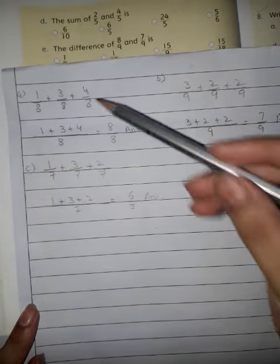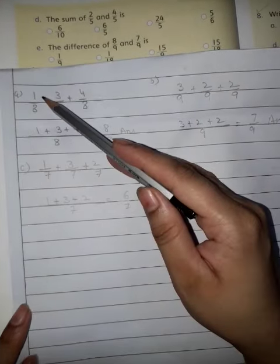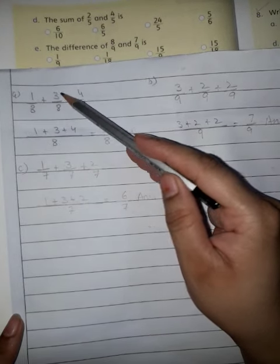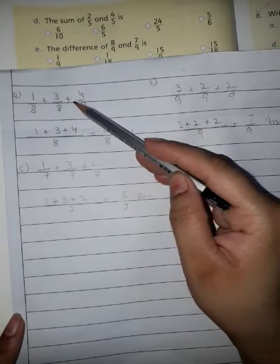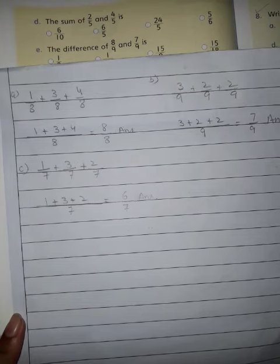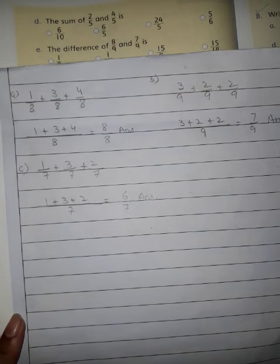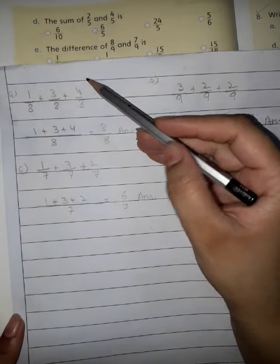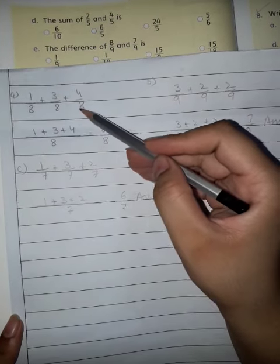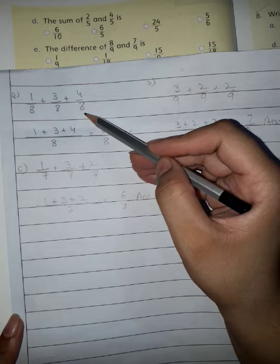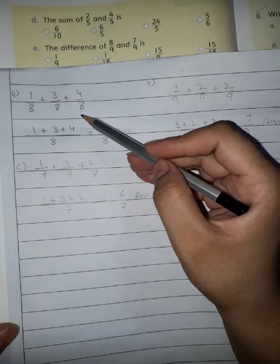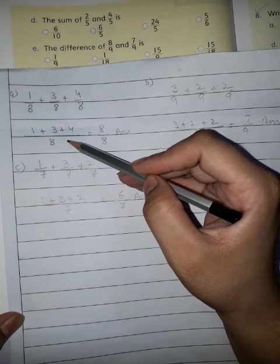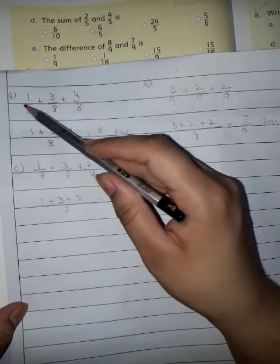In part A we have 1 over 8 plus 3 over 8 plus 4 over 8. We have to do addition. The numerators are different but the denominator is the same. First we will write the numerators and the denominator.